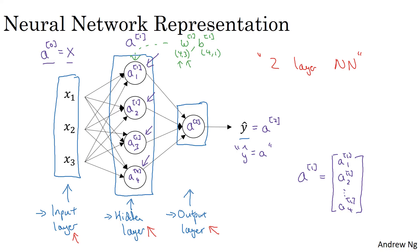We'll talk later about the dimensions of these matrices, and it might make more sense at that time. But then similarly, the output layer has associated with it also parameters W superscript square bracket two and B superscript square bracket two. And it turns out the dimensions of these are one by four and one by one. And these one by four is because the hidden layer has four hidden units, the output layer has just one unit.